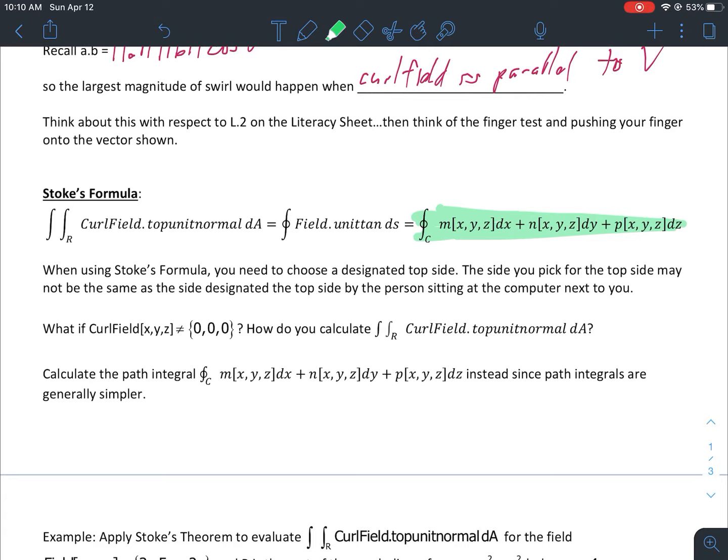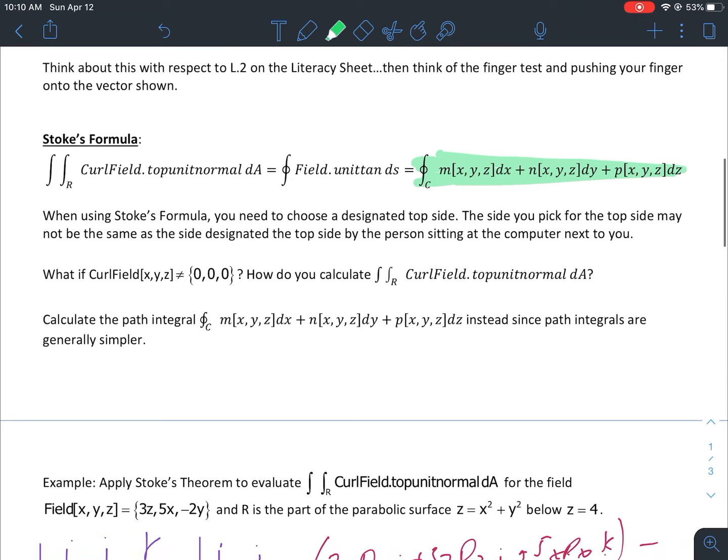Especially if it's not a flat horizontal surface and there is no top or bottom, you can pick which side is the top side. So what you pick might not be the same as someone else in the class or in general. If curl field is not equal to {0,0,0}, how do we calculate that? We basically want to use the highlighted part there - that's usually the easiest one. Path integrals are usually easier to do than the double integrals there.